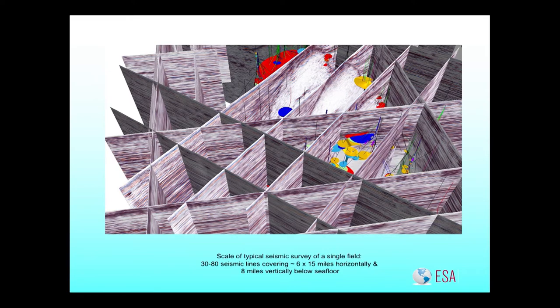Seismic is typically acquired in cross-sections as two-dimensional seismic data, and offshore we usually have a density of about 60 or 80 lines over an individual field. What it would show you is that the white area in the center is a salt dome, and those colored polygons around it are oil and gas reservoirs, which tend to accumulate on the sides of salt domes.